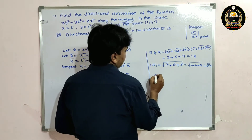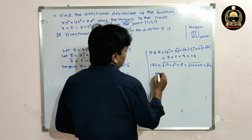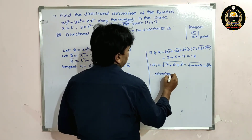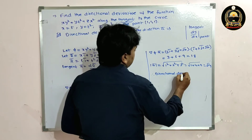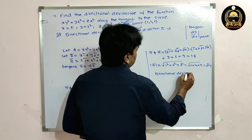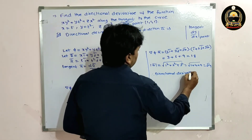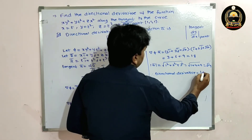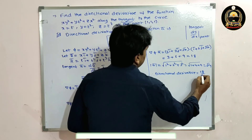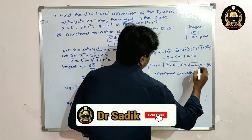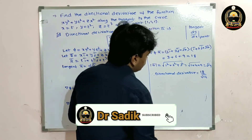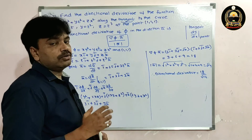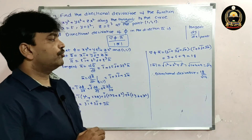Therefore, the directional derivative = ∇φ · a̅ / |a̅| = 18/√14.